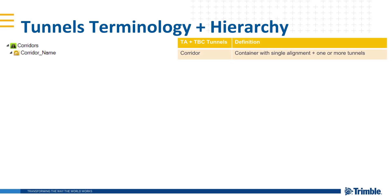In the Project Explorer, tunnel objects are organized under the Corridors heading. Multiple road or tunnel corridors can exist in a project under this heading. As you can see here, under the green corridor heading, we have our tunnel corridor. Each tunnel corridor is related to a single alignment.